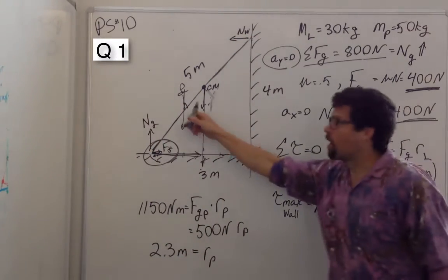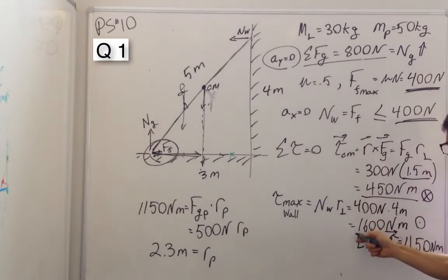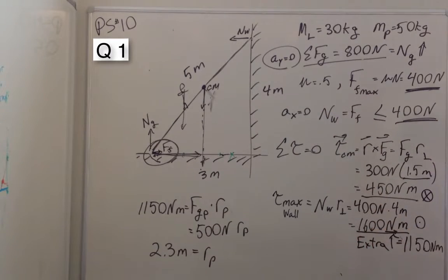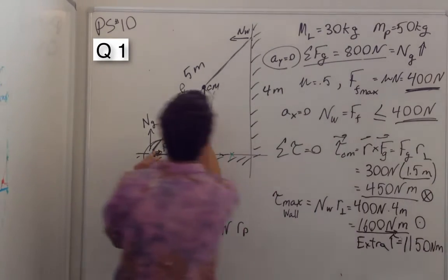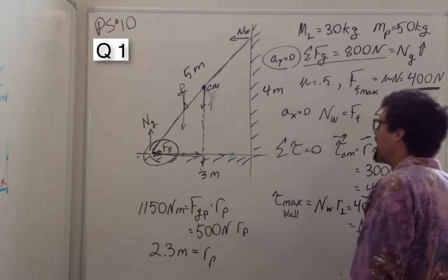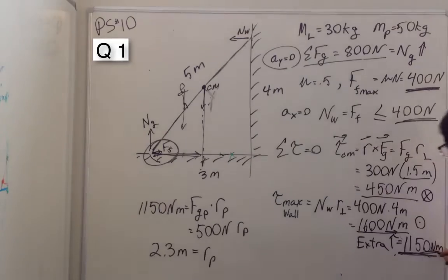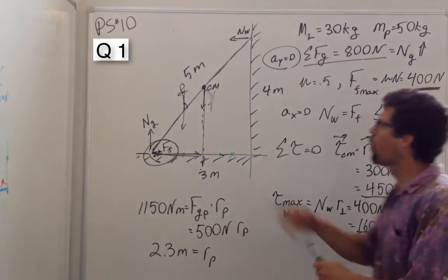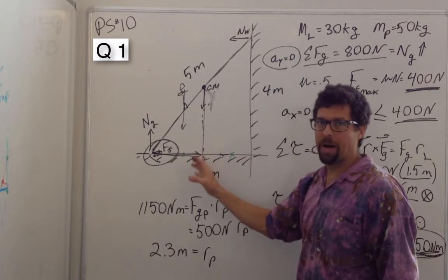So before we fall, this wall is going to be able to provide us with 1,600 newton meters of torque in this direction. And we subtract those two and we find that the wall is going to be able to provide an extra 1,150 newton meters of torque before we slip out.